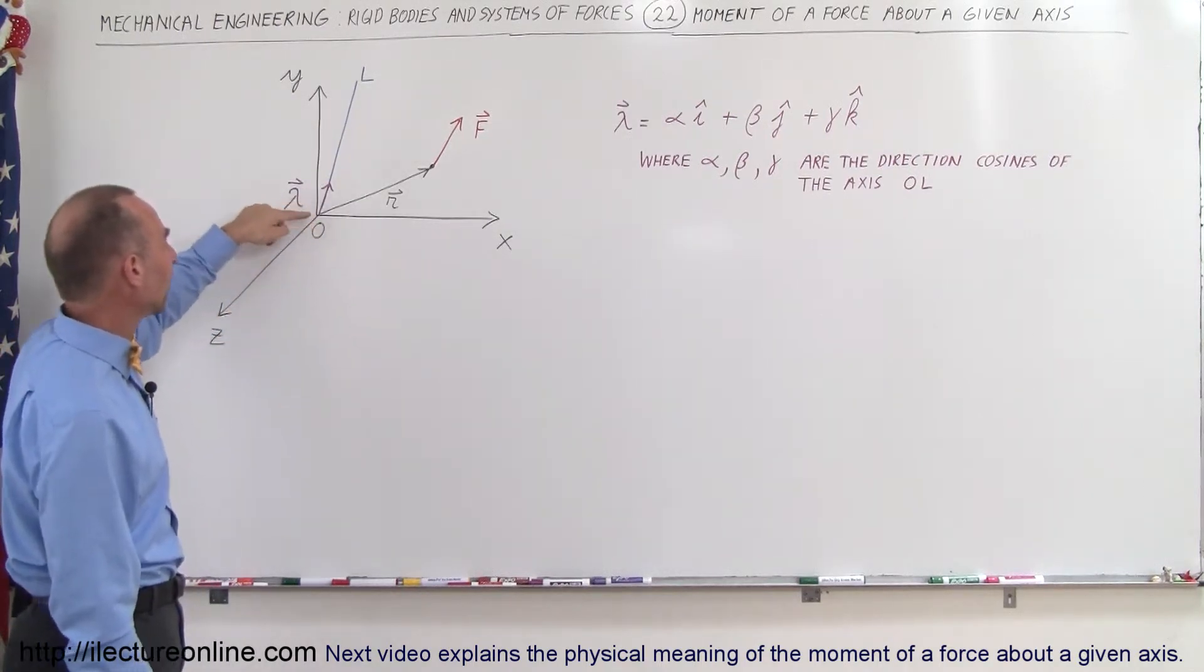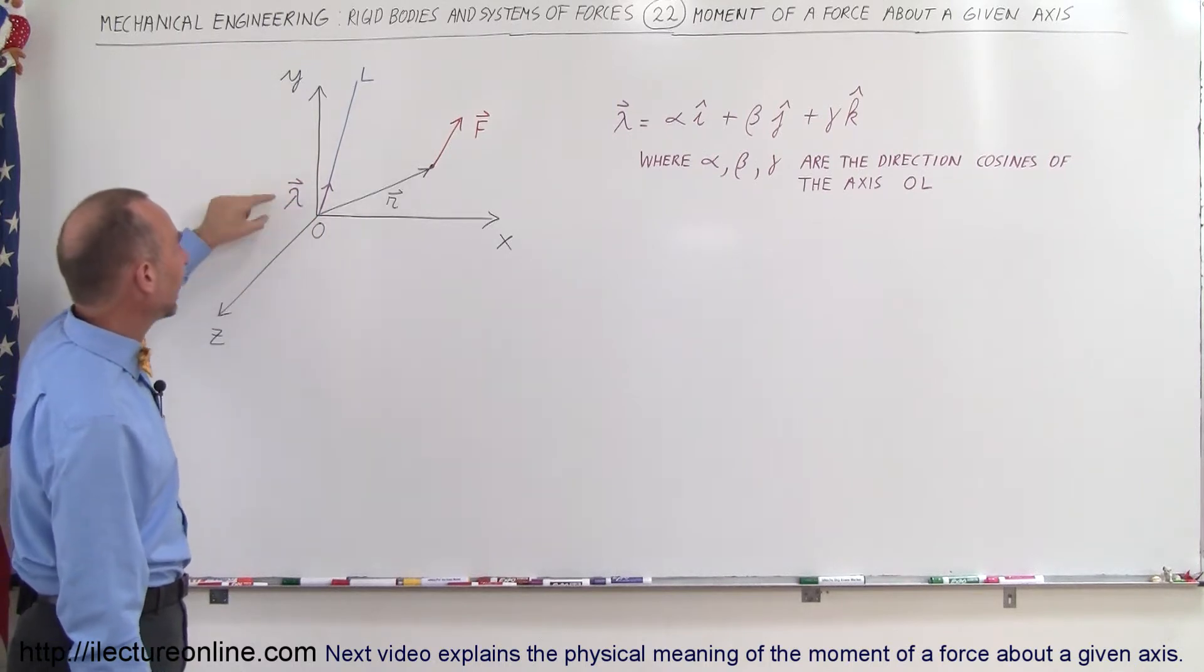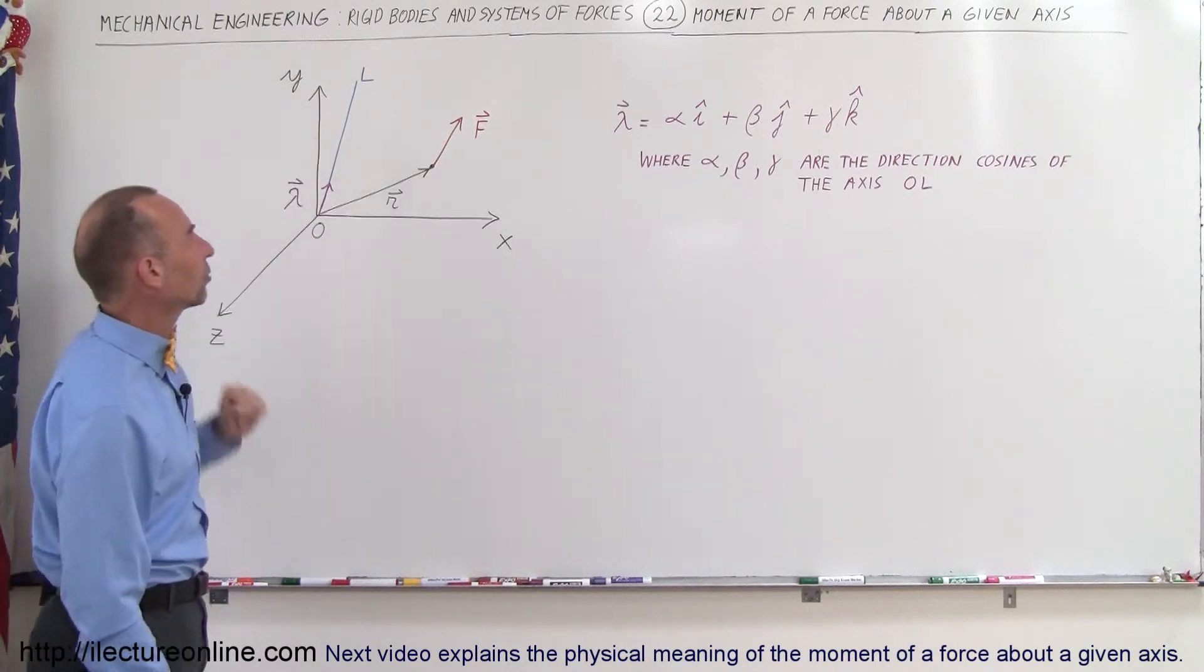O is the origin where x, y, and z cross, and L is some arbitrary direction. Lambda with the arrow on top is the unit vector in the direction of that arbitrary axis.